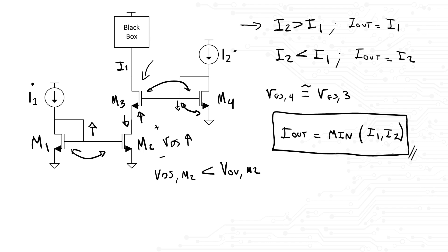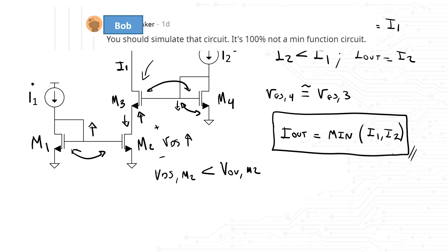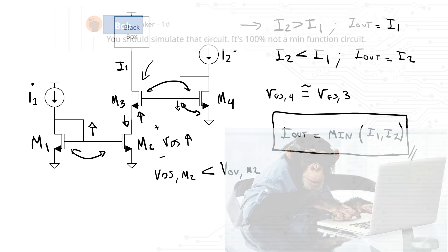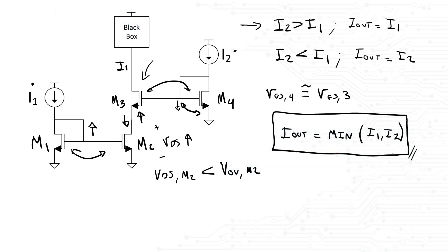Now, Bob, being Bob, decided to stick to his guns and said the following. You should simulate that circuit. It's 100% not a minimum function. I am so sorry, but we do not get an education to become simulator monkeys. Maybe Bob is one. Don't be like Bob. After explaining to Bob, we should not be simulator monkeys. And just because he cannot simulate a circuit, it doesn't mean it won't act that way.